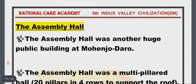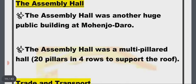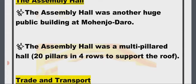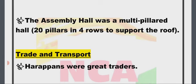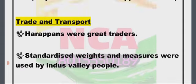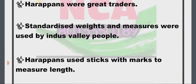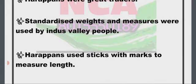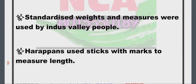The Assembly Hall was another huge public building at Mohenjo-daro. It was a multi-pillared hall with 20 pillars in four rows to support the roof. Harappans were great traders and standardized weights and measures were used by Indus Valley people.